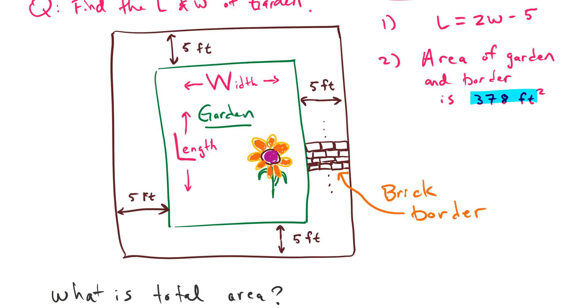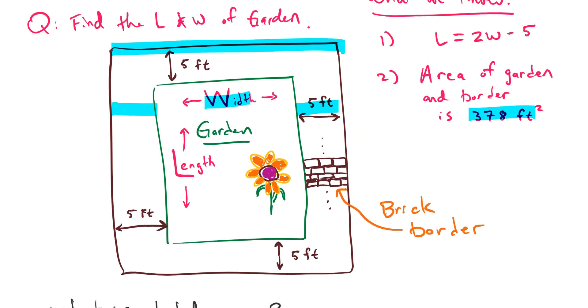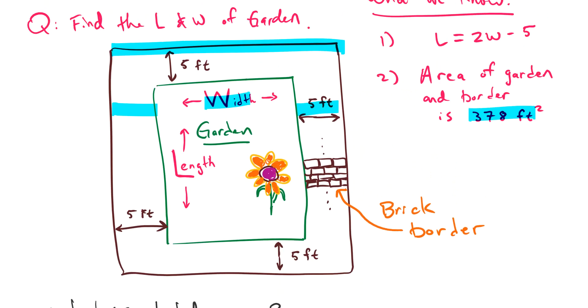We need to actually use this whole area, this width, which is the width W of the garden plus 5 feet on either side, so that gives us W plus 10. So what we're going to do really is we're going to times these two sides together to find the area.